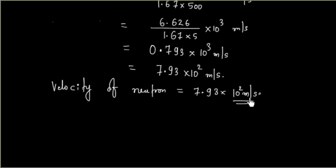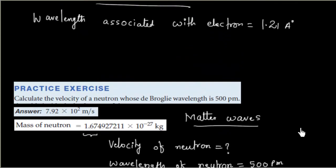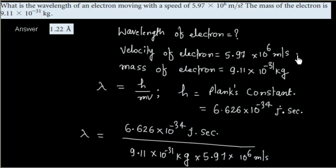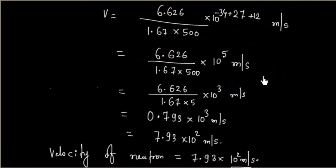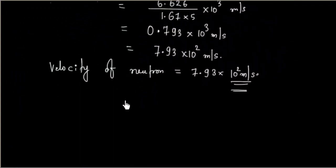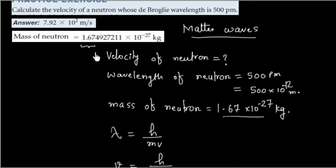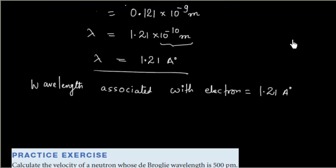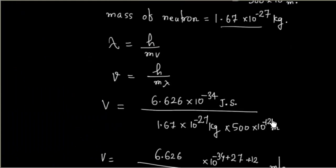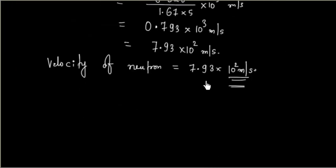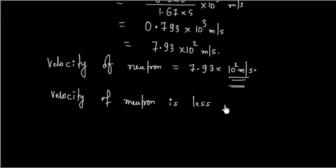If you see one important observation: the velocity of the electron is very high, 5.97 × 10⁶ m/s, but the velocity of the neutron is very low, only on the order of 10² m/s. This is because the mass of the neutron is very high — neutron has a mass of 10⁻²⁷ kg, but the electron has a mass of 10⁻³¹ kg. So the speed of the neutron is low compared to the speed of the electron.